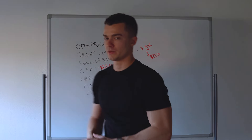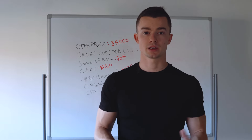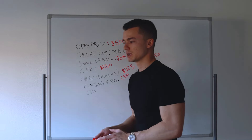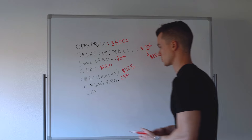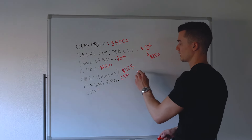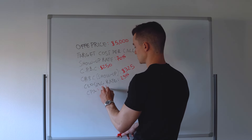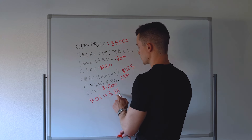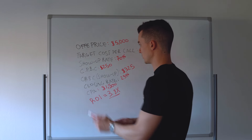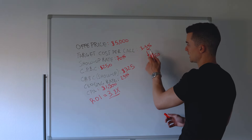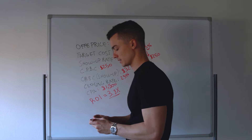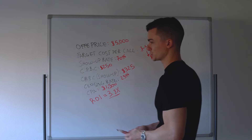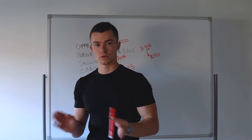For closing rate, let's use a standard 25% — though if you have an amazing closer or an amazing offer that's trending, it can be 40-50%. Playing it safe at 25%, your CPA is $325 times 4, which equals $1,300. That means your return on investment is 3.8x. If you have a lower cost per call at around 3% of the offer price, your return goes up to roughly 5x.